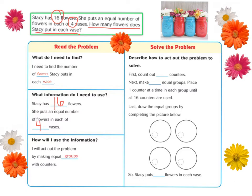Now let's look at how to act out this problem. First, count out 16 counters: 1, 2, 3, 4, 5, 6, 7, 8, 9, 10, 11, 12, 13, 14, 15, 16.